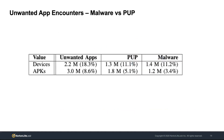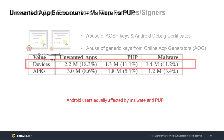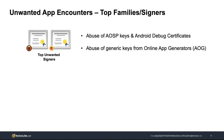We also separate unwanted apps between PUP and malware, and we observe that both classes equally affect Android users. A closer look at the top unwanted signers shows that the abuse of publicly available cryptographic keys, like that from the AOSP project, is actually a common practice. Interestingly, we also see actors abusing the generic keys coming from online app generator services, which are used to facilitate inexperienced users for developing new Android applications, but unwanted app developers also leverage these services for signing their applications.